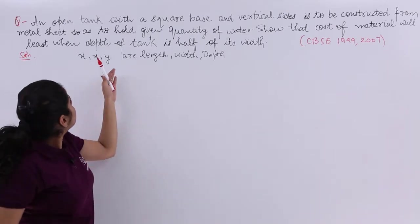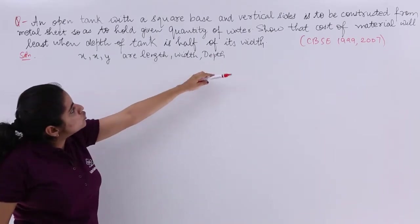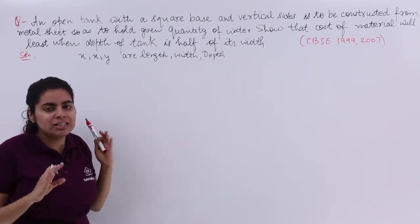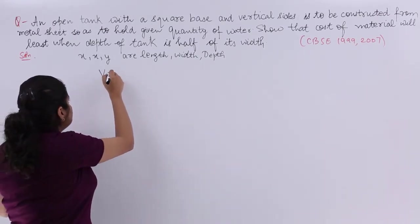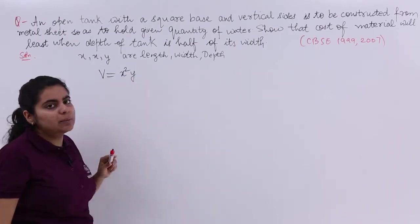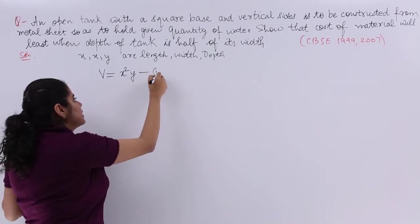Now, no units are mentioned - no meter, no centimeter. So they can be meter, centimeter - all have to be same. Quantity related to water means volume. So length, breadth, height multiplication is volume. V = x²y. Equation number 1.